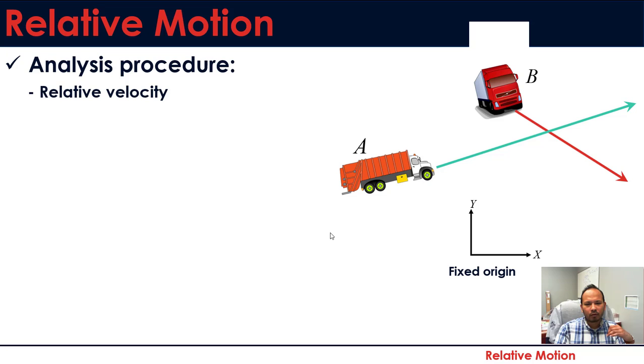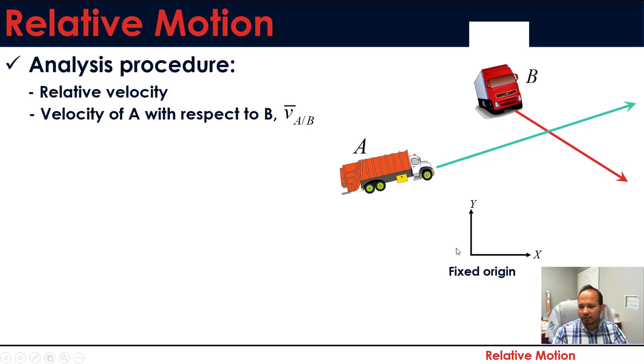Now let's see a different scenario where we want relative velocity, now velocity of A with respect to B. We have changed. Now we want to see what is the velocity of A and what is the driver in that truck B seeing, observing the velocity of A with respect to B. Again, your fixed origin would be any point other than these two moving trucks, and our equation just changes. We want velocity of A with respect to B, so we will have the difference vA minus vB.